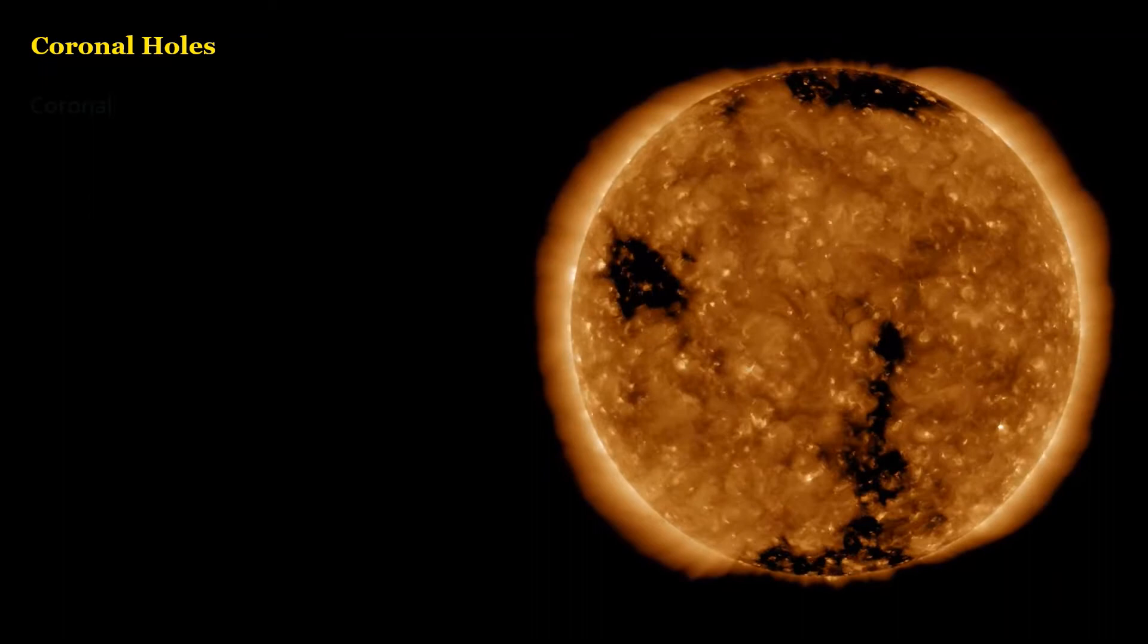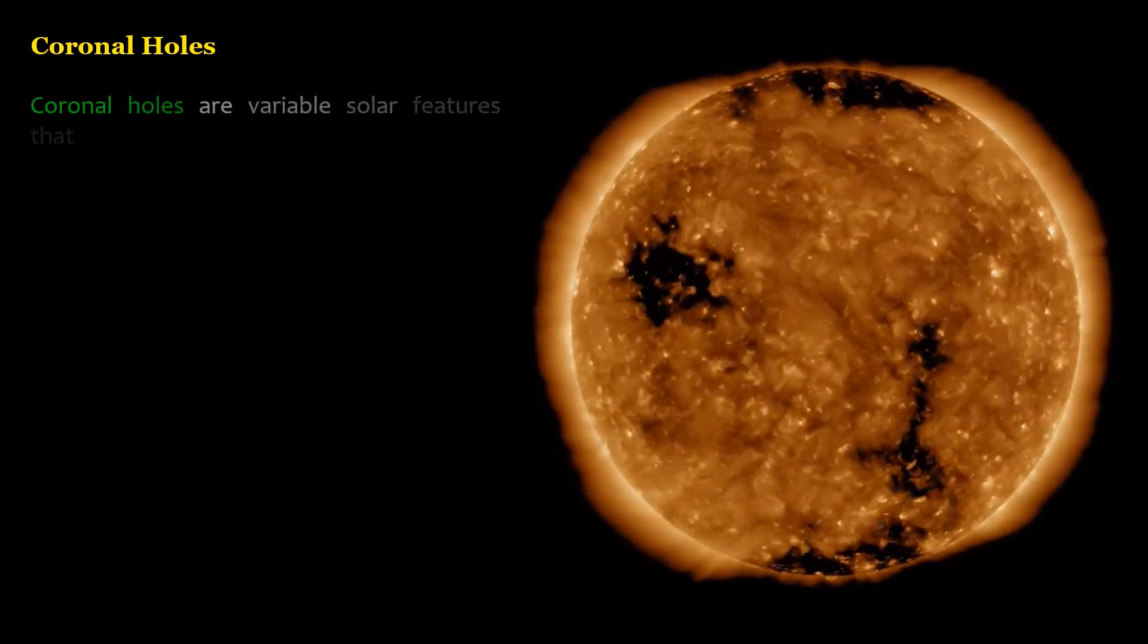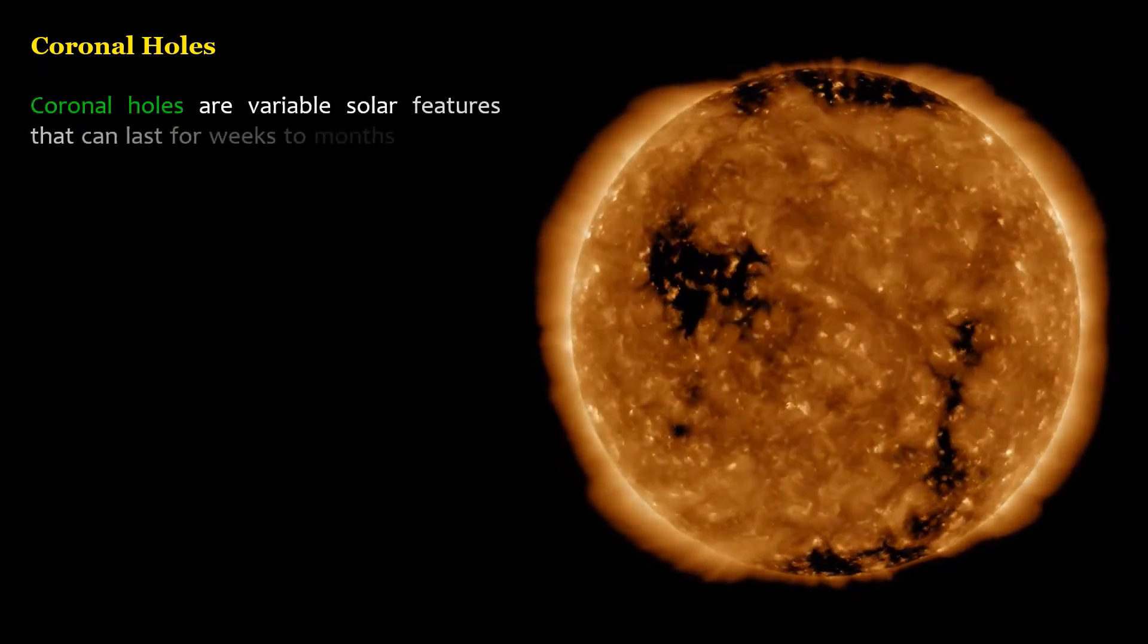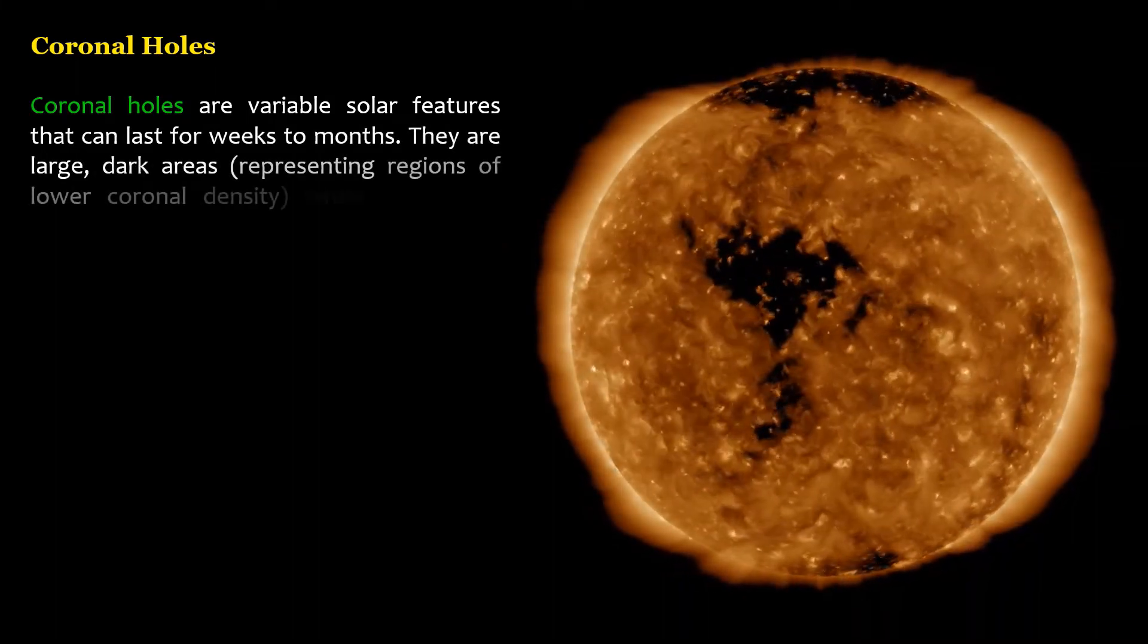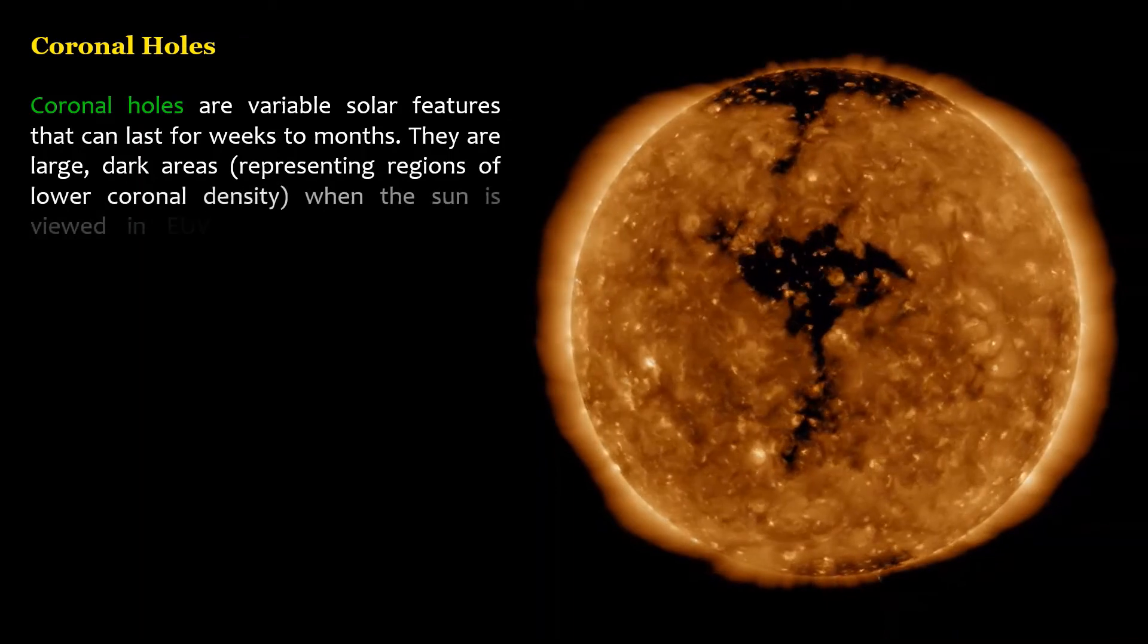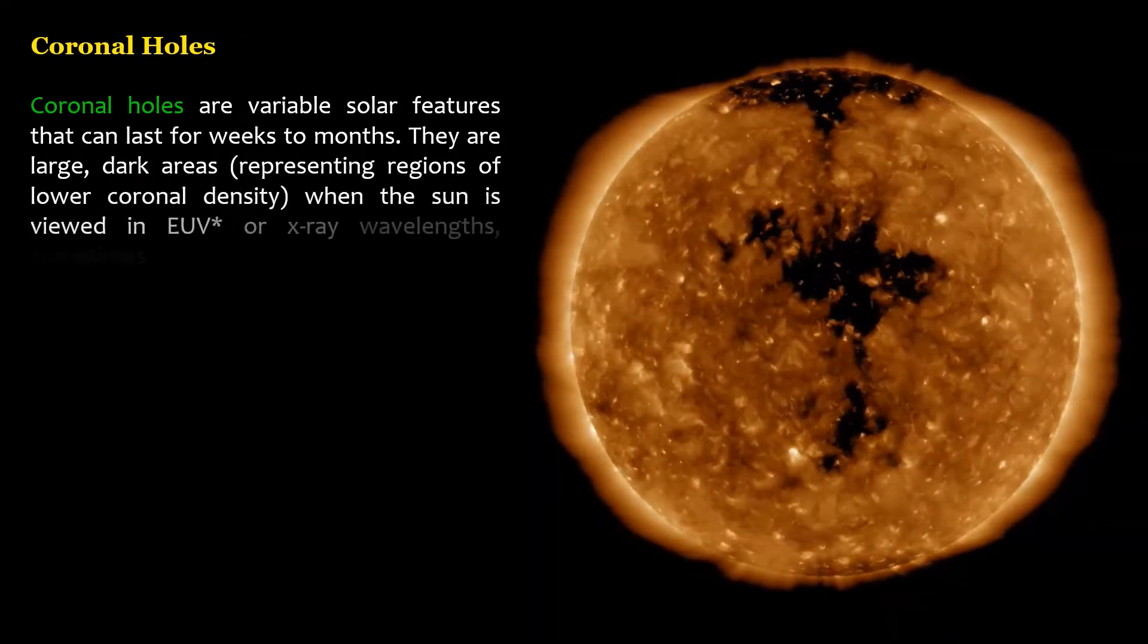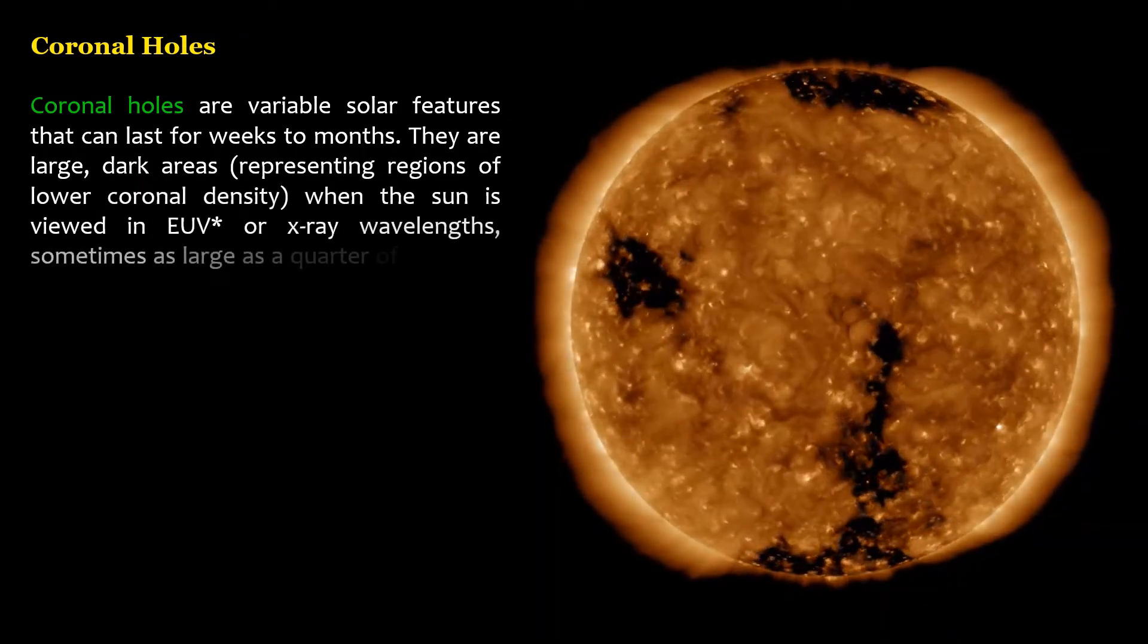Coronal holes are variable solar features that can last for weeks to months. They are large, dark areas, representing regions of lower coronal density when the sun is viewed in EUV or X-ray wavelengths, sometimes as large as a quarter of the sun's surface.